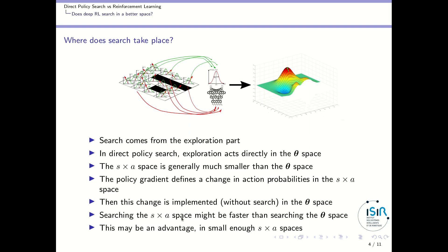We can say that policy gradient methods search in the state-action space, which might be faster than searching the theta space because the theta space is generally much larger. This may be a key reason for the advantage. However, reinforcement learning research increasingly considers robots or complicated agents learning from images in difficult environments, where it is no longer obvious that the state-action space is smaller than the policy parameter space. So this argument holds for small RL problems but may be wrong for more complex ones.